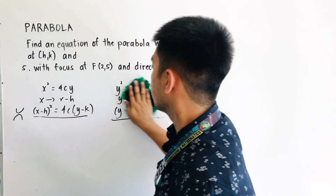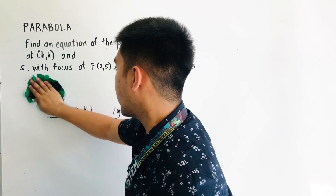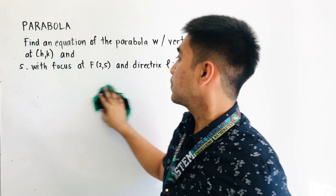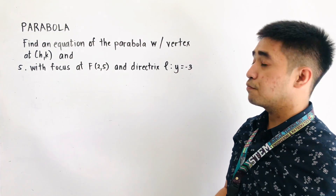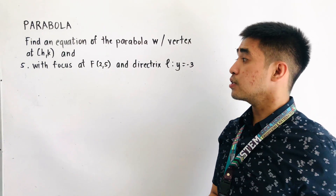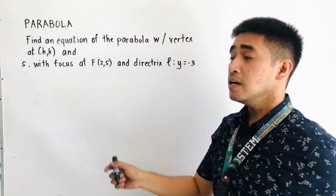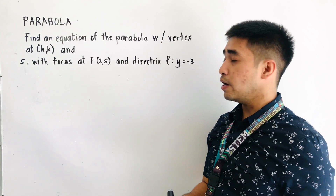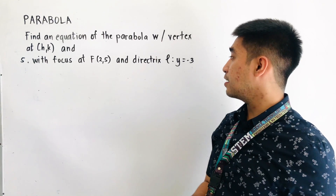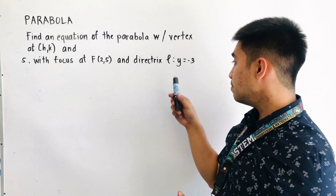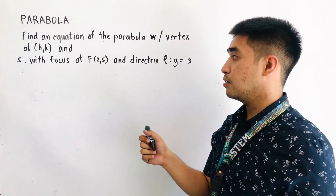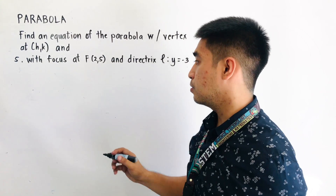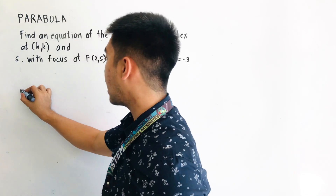So let us now try to answer this problem. Find an equation of the parabola with vertex at (h, k), where the focus is located at (2, 5) and the directrix L is y equals negative 3. Let us first graph this.